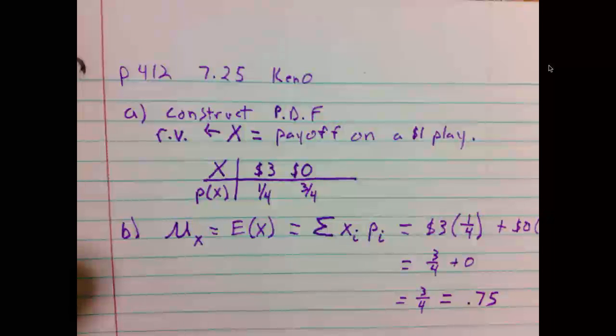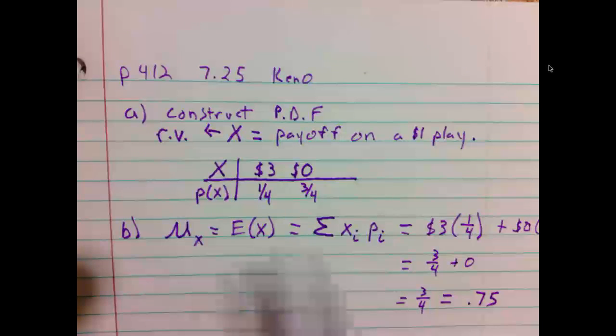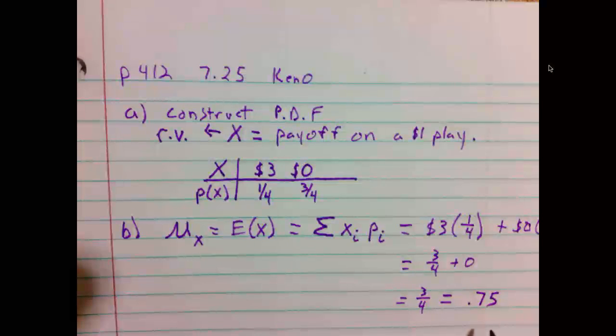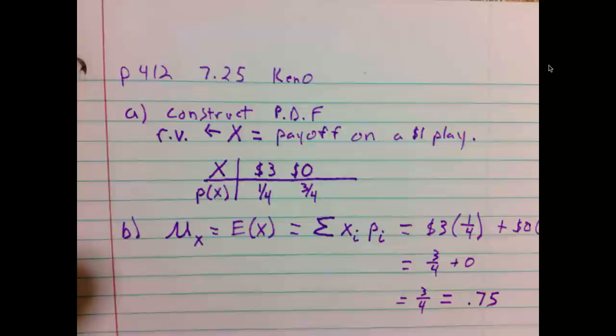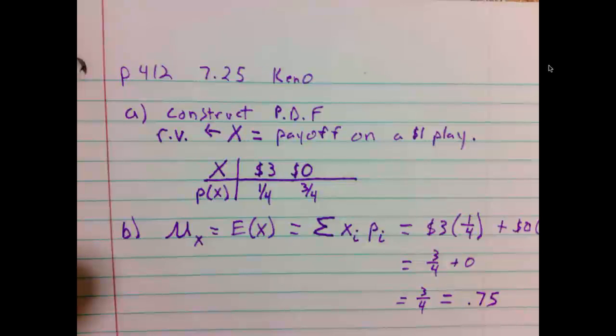So, our expected value, that is our payoff, in the long run on a $1 play is 75 cents. That means for every $1 we're putting in, we're getting 75 cents back. As you can see, that's not a profitable situation for the player. That's how the casino, or whoever is holding the Keno game, makes money.